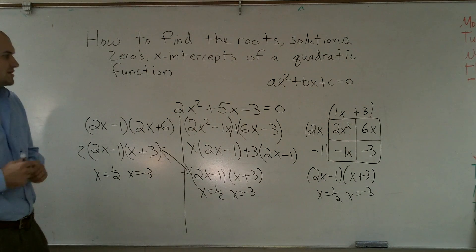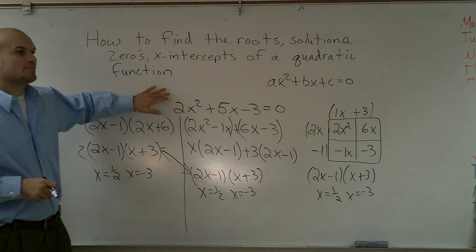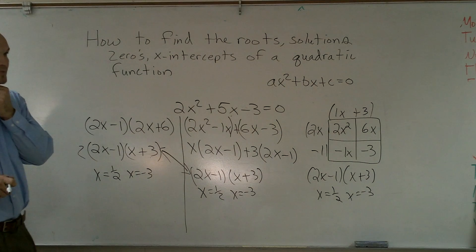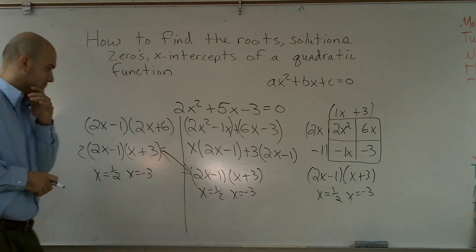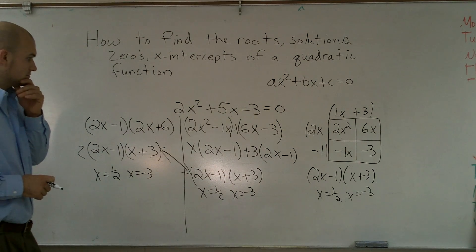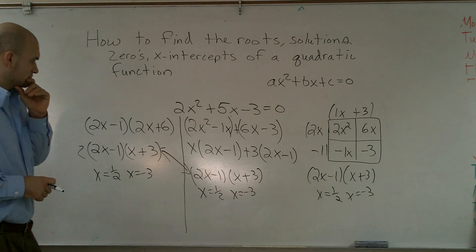There's three different ways you can finish off the problem when you're factoring a problem when a is greater than 1. All right? I have a question. Yes? How did you get x times 2x minus 1 plus 3 times 2x minus 1? Right there on the middle problem in the second step.